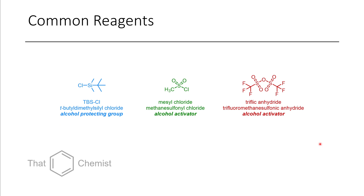Before we get into today's content, I wanted to introduce a few extra common reagents. The first one is TBS chloride — TBS stands for tert-butyldimethylsilyl. This is good for protecting alcohols; if you have multiple alcohols in a molecule, you might want to protect some of them so you can do chemistry on the others. The other advantage is the protecting group makes the compound more lipophilic, more soluble in common non-polar solvents, which is often desirable for synthetic chemists who want to avoid working with water.